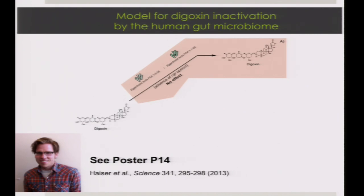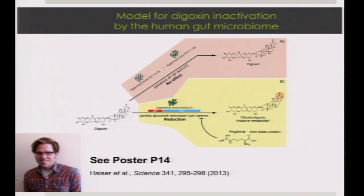This builds toward a model of digoxin metabolism accounting for differences in colonization between individuals: some people may be colonized predominantly with strains lacking the CGR operon and incapable of metabolizing the drug, so administered digoxin remains intact; others carry strains like the E. lenta type strain with this operon and convert the drug to dihydrodigoxin, modulated by dietary protein and arginine levels. More information is available at poster P14 and in the paper published last week.